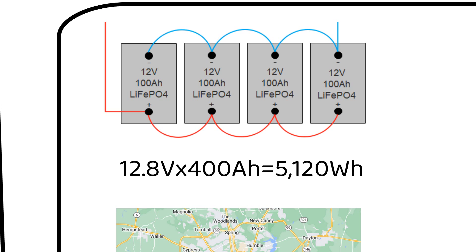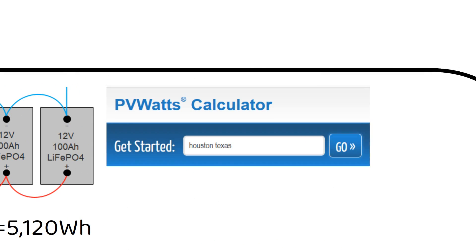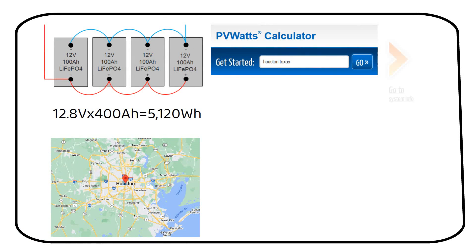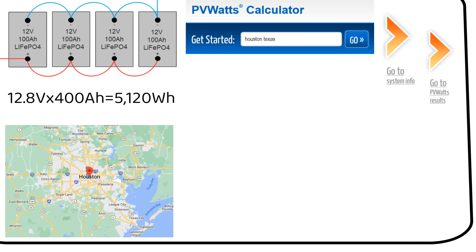For this we will use an online website called PVWatts. You will find the link to this website in the video description. Enter the location in the search bar and click go. Then click go to system info and click again on go to PVWatts results without changing anything.